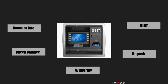An ATM has a few functionalities when we insert our bank card. There is a functionality known as account info — it will display all our account information like the account username, account number, IFSC code, etc. There is another functionality known as check balance, which lets us check the amount of money currently available in our bank account. And there is another functionality known as withdraw, where we can withdraw money from the ATM machine.